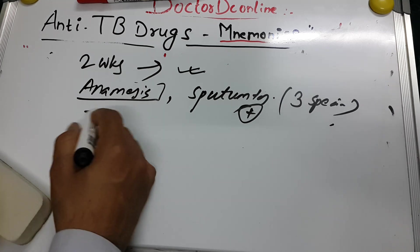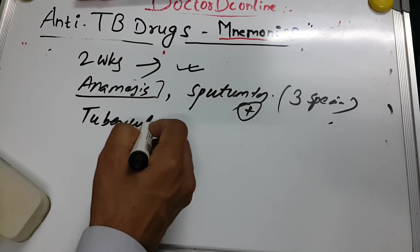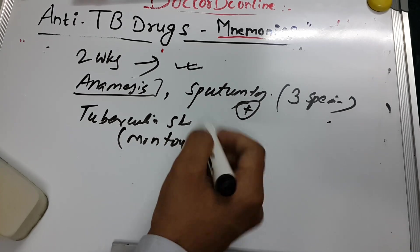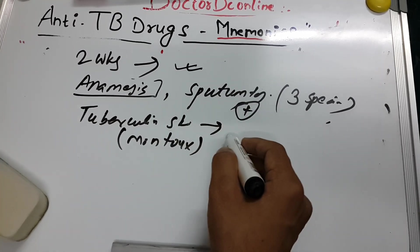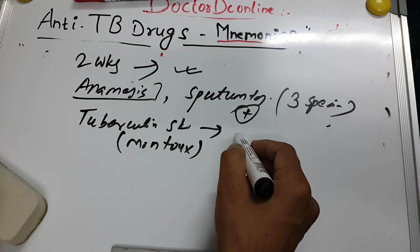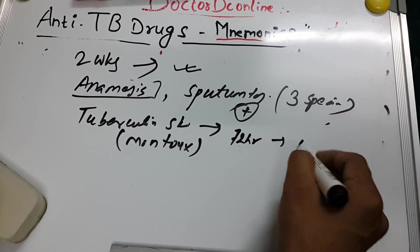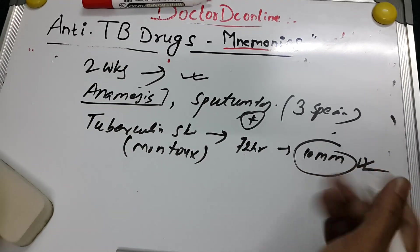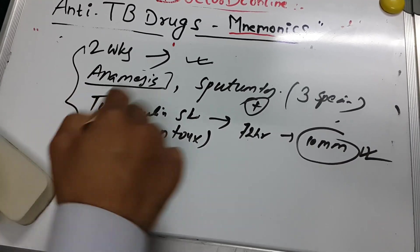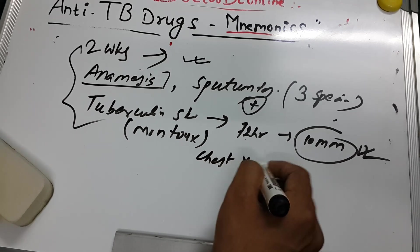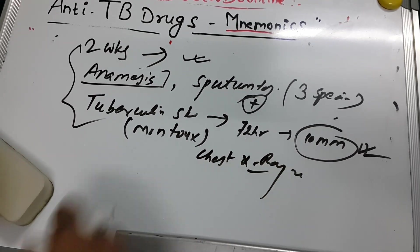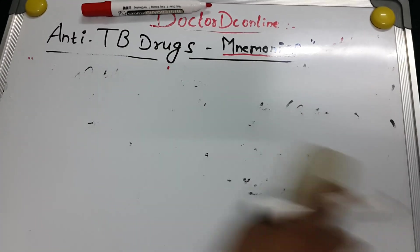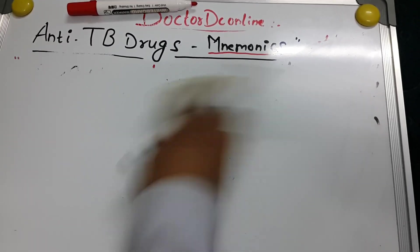Another diagnostic tool is the tuberculin skin test, also called the Mantoux skin test. After injection, if the induration is more than 10 mm at 72 hours, it is positive for tuberculosis. A chest X-ray should also be performed.